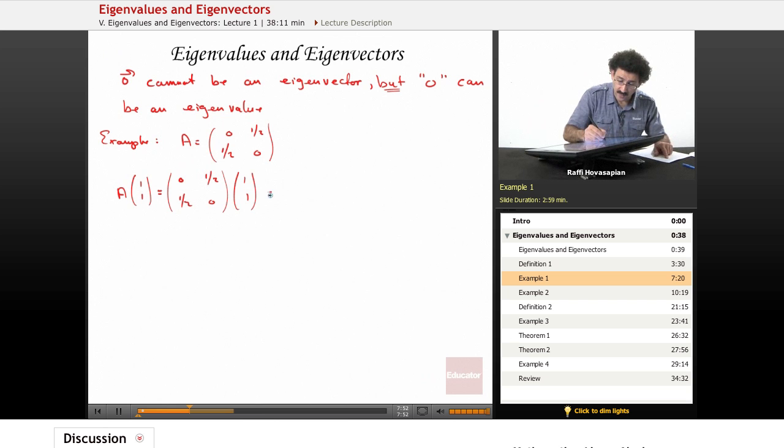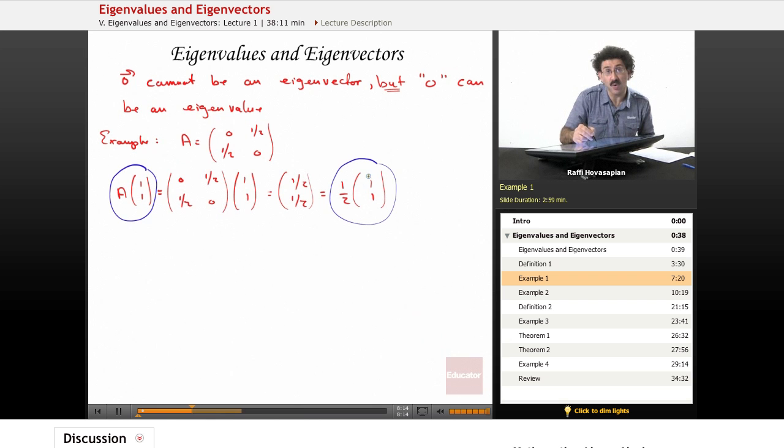That's equal to 0 times 1 plus 1/2 times 1, that is equal to 1/2. And then 1/2 times 1 plus 0 times 1, well that's equal to 1/2. Notice what I've done here: A times the vector [1, 1] is equal to [1/2, 1/2].